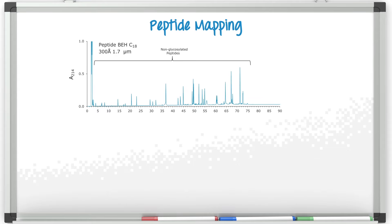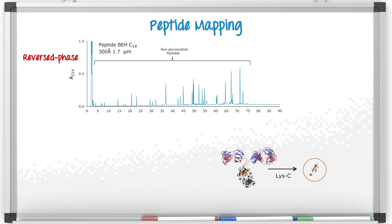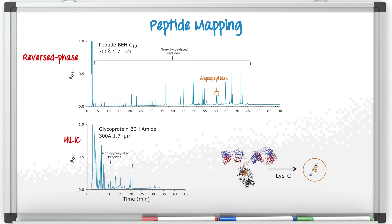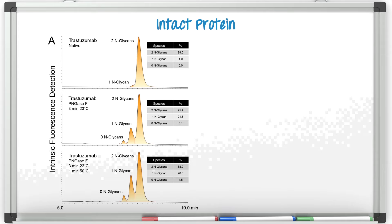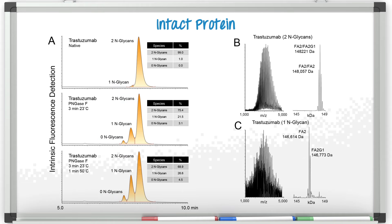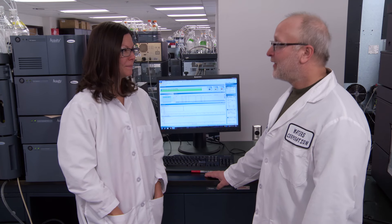Here's a really good example. This is a separation of glycopeptides, and what we've done is digested a protein. On the top separation, we're looking at the separation on a reverse phase column where we basically have all the glycopeptides coming out under one peak. Whereas if we run this on the glycoprotein BEH amide column, we can see a really nice separation of those glycopeptides — it's really clear when you zoom in on these chromatograms.